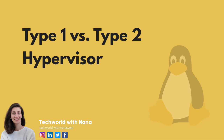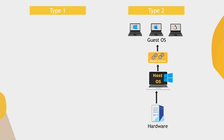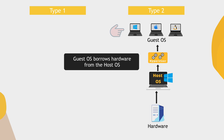Now let's see the difference between type one and type two hypervisors. The type of hypervisor I just described — creating virtual machines on top of an existing operating system — is called a type two hypervisor. You have the host operating system already installed on the hardware; on that OS you install a hypervisor like VirtualBox, and then using VirtualBox you install guest operating systems, which borrow the hardware resources from the host operating system.